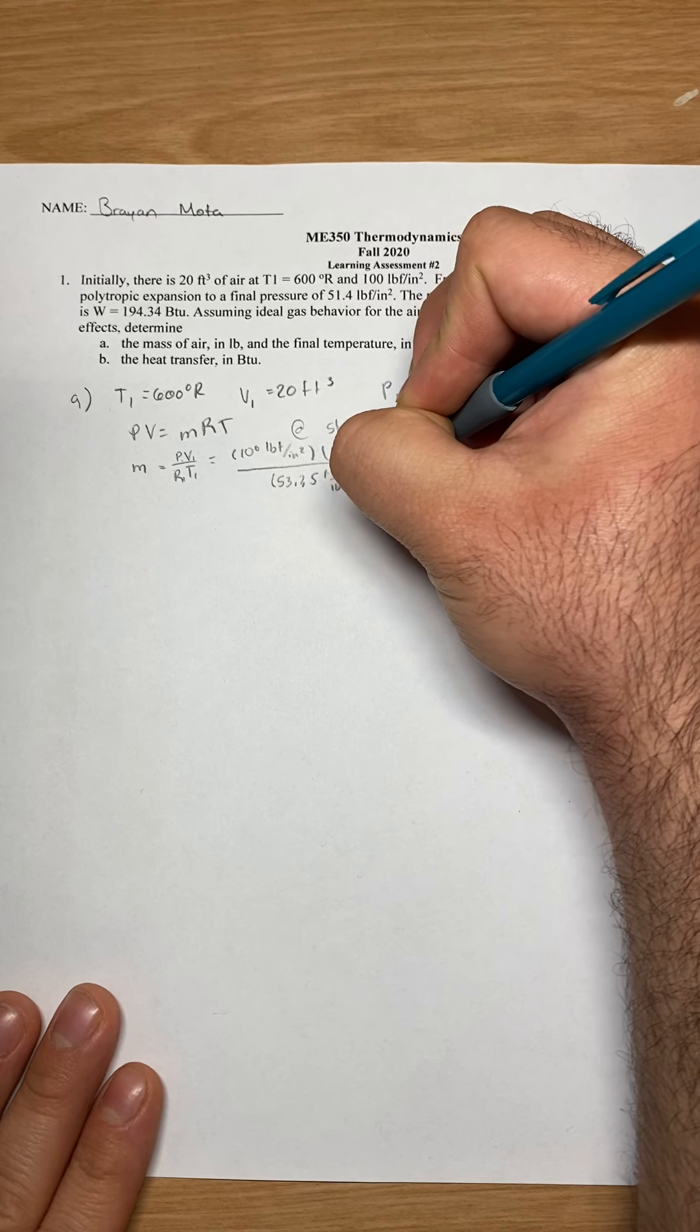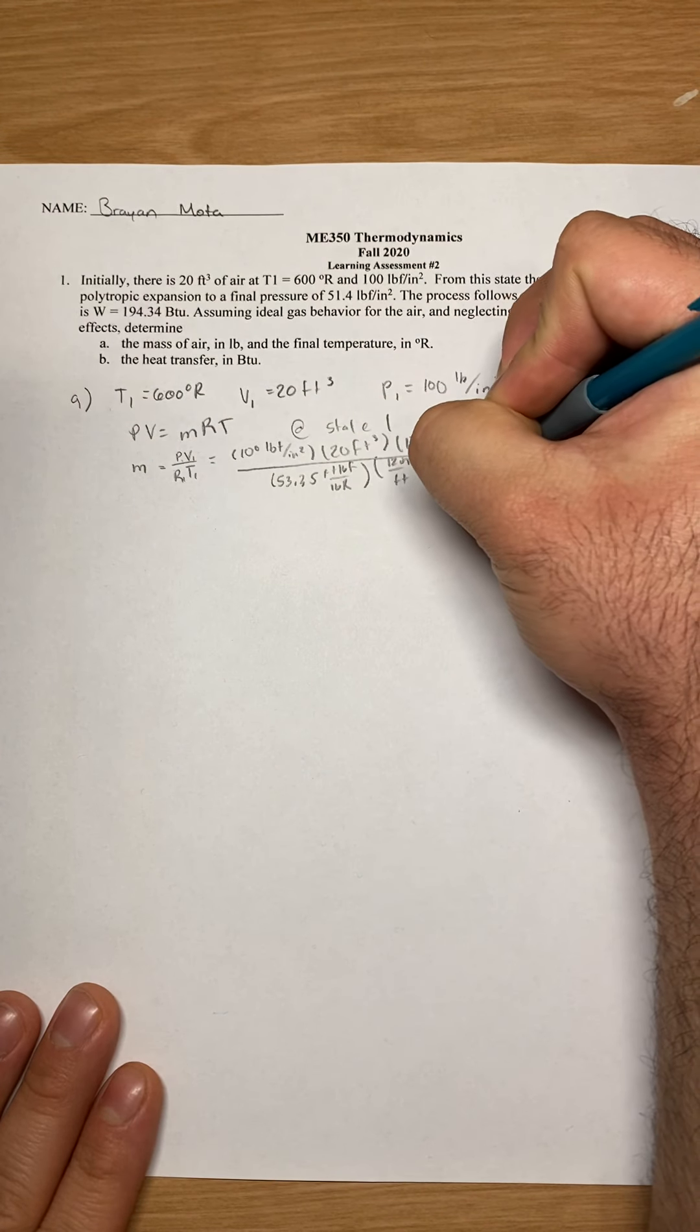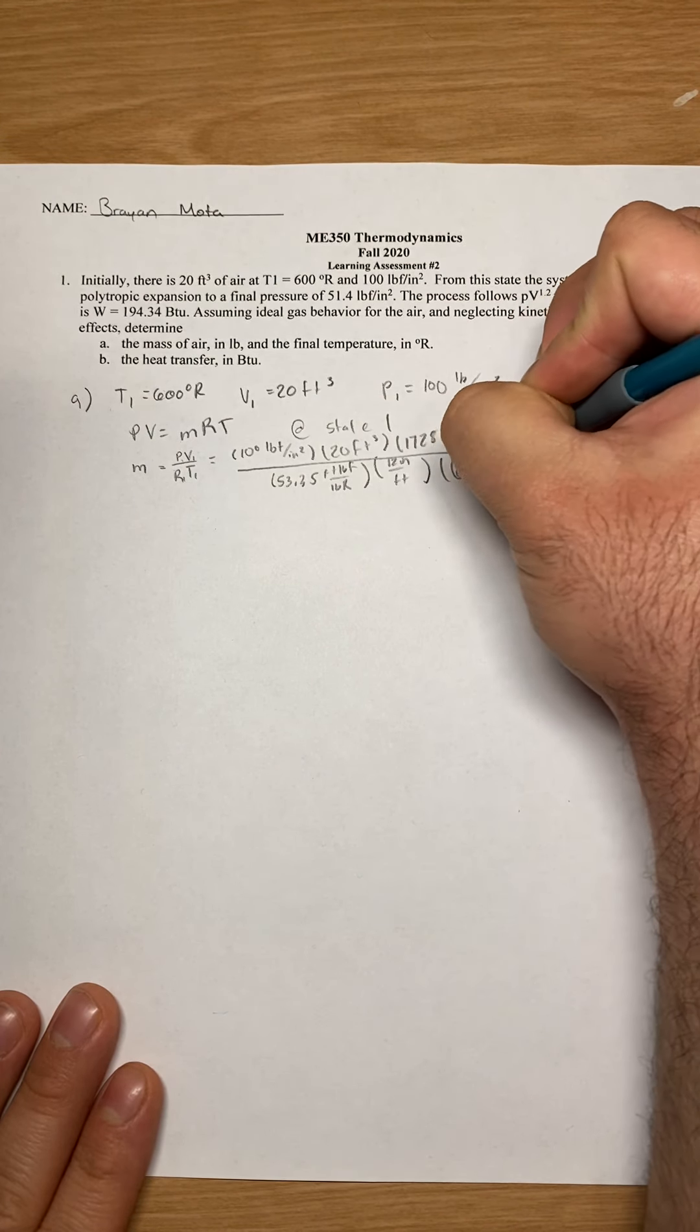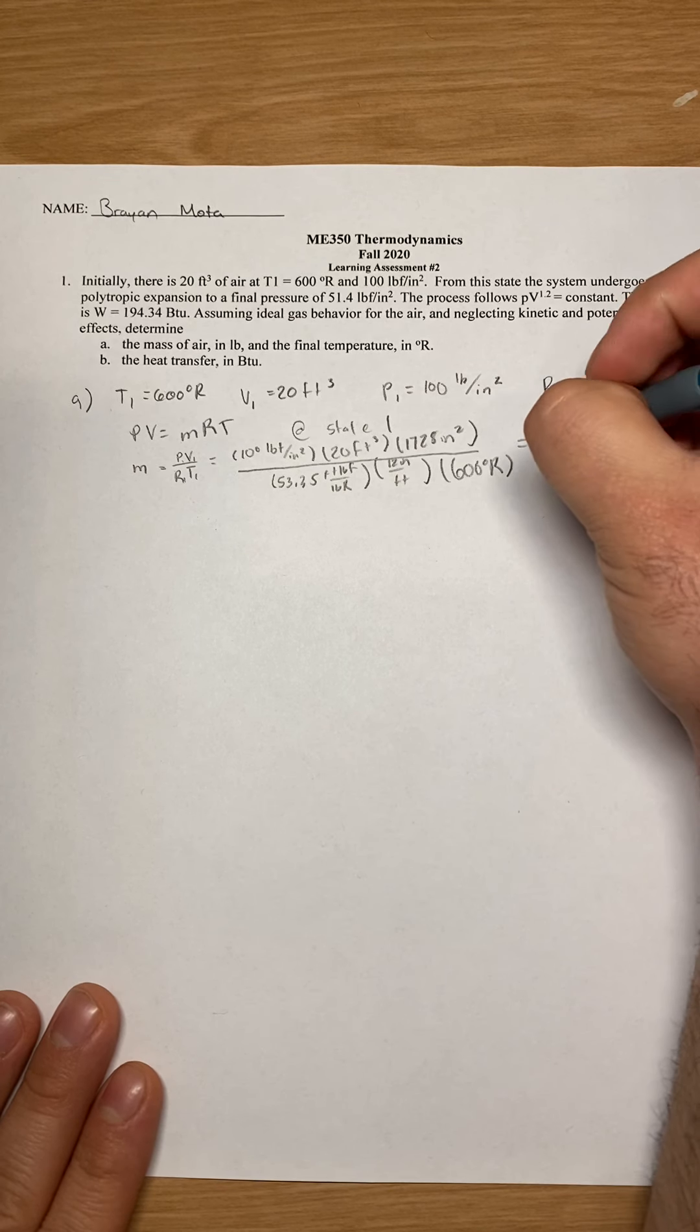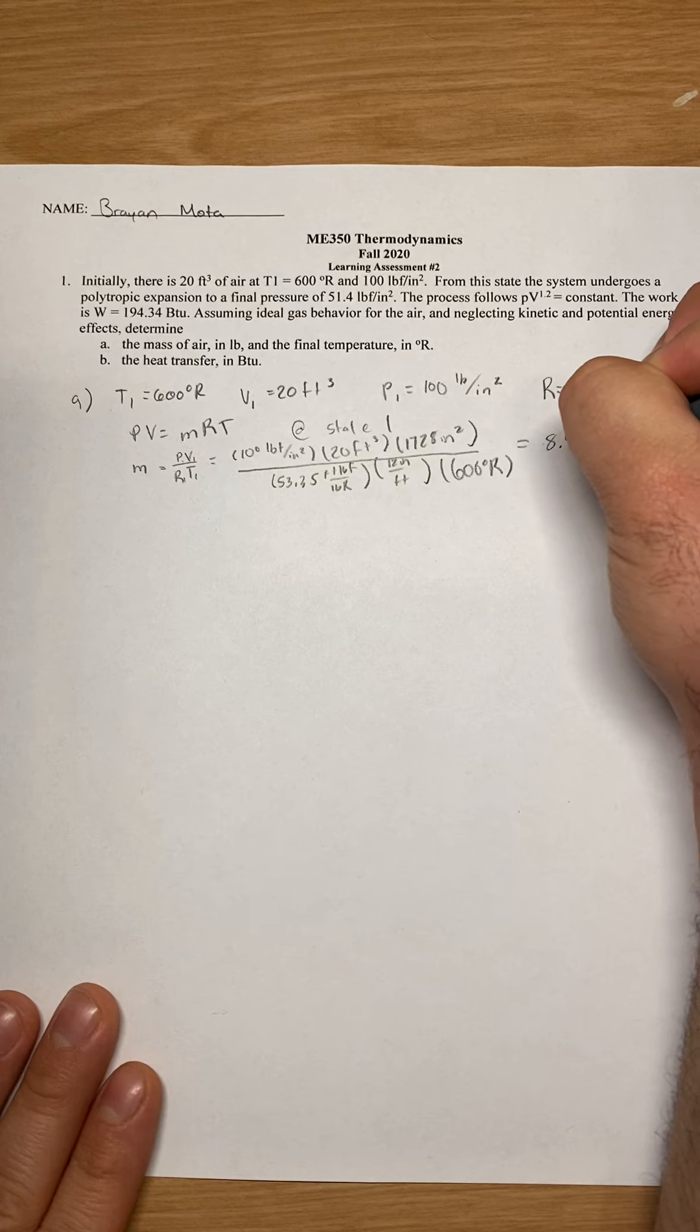We convert 12 inches to feet, times our 600 Rankins. Plug that into a calculator and we get 8.997 pounds.